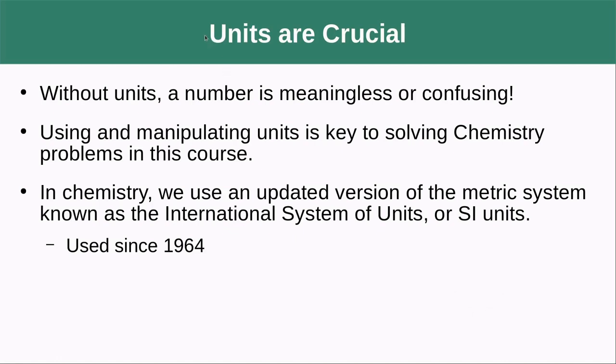It's important to realize that units are really crucial. Without units, a number is meaningless or confusing. Using and manipulating units is key to solving chemistry problems in this course. This can be a little difficult for people at first when they transition from a pure math course, where you're dealing with pure numbers that don't have units, to a science course where any number that you write is really going to be meaningless or at best really confusing without a unit associated with it. In this course, you're always going to have a number and then a space, and then the unit that's associated with it. Once you start getting used to doing some unit analysis in your problems, it really gives you a good intuition of whether or not you're getting it right or wrong.